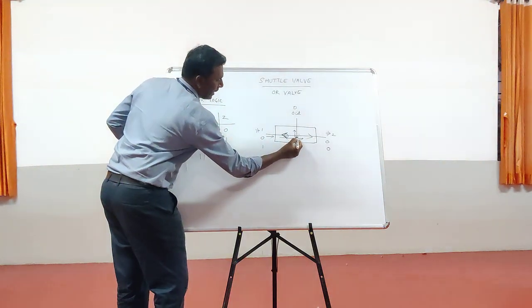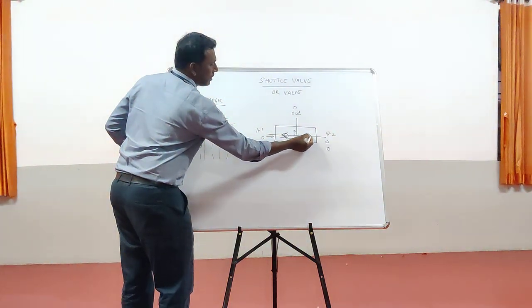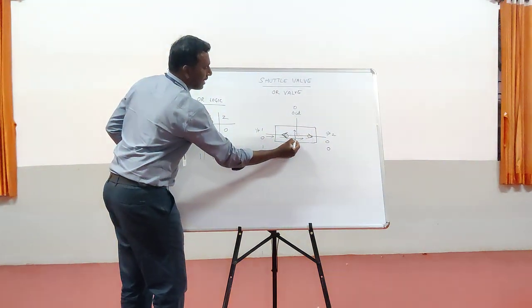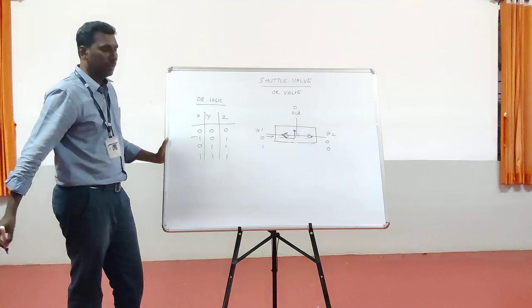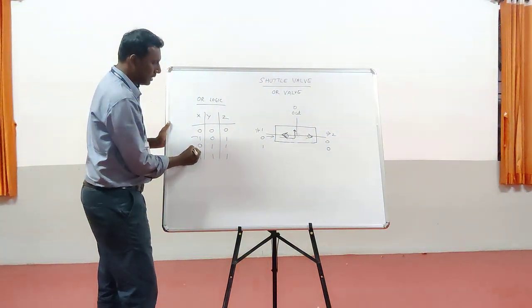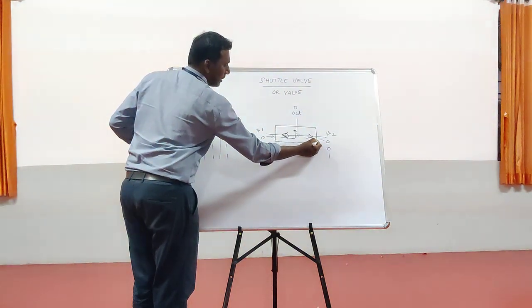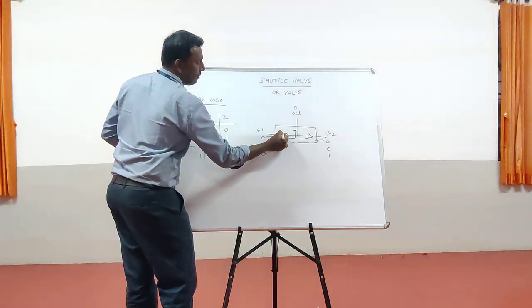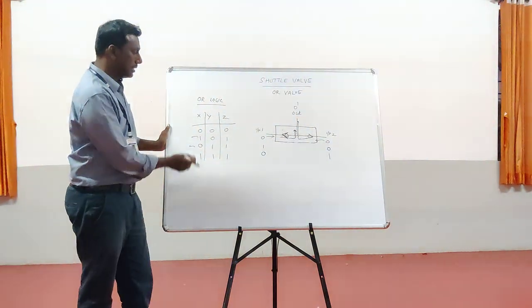Due to the higher pressure, the float bar pushes check ball number two to the closed position, so fluid will not flow in that direction — fluid flows only through the output direction. This is the second logic combination. The third combination is the vice-versa: if input one is not activated and input two is activated, the fluid enters from that line in reverse. The float ball goes to check ball number one, closes it, and fluid flows only to the output line. Output is obtained.